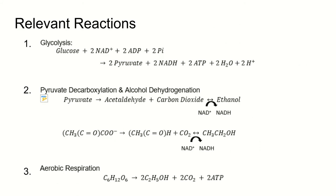Fermentation has three relevant reactions. The first being glycolysis, which is used to convert glucose, C6H12O6, into pyruvates. The second is pyruvate decarboxylation and alcohol dehydrogenation, which converts pyruvates into the desired product of ethanol. This third reaction is the undesired reaction, and that is aerobic respiration. This occurs when the system gets exposed to oxygen.